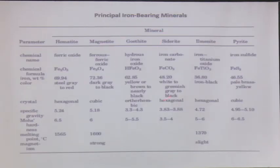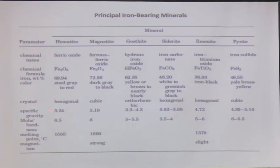These are the principal iron-bearing minerals. What I want to highlight is that if I want to separate iron ores from other gangue minerals — even within the iron ores themselves — there is a lot of variation in specific gravities. The lowest is 3.3 and it can go up to 5.24. So even separation of different iron-bearing minerals becomes a problem because of differences in their physical and chemical properties.